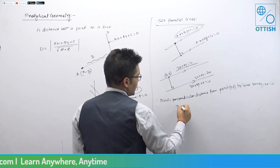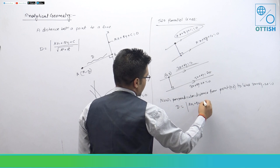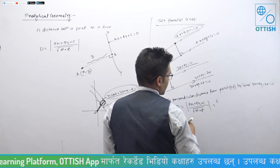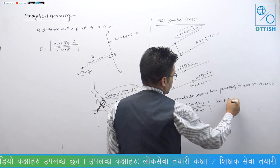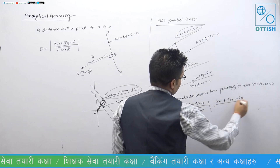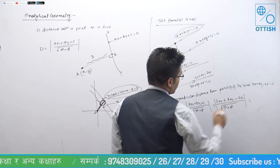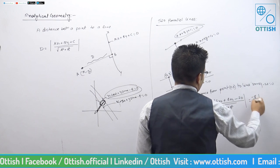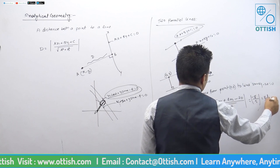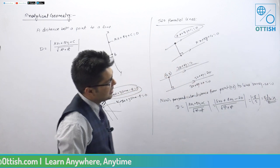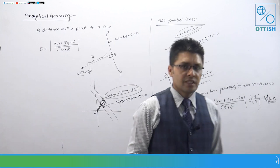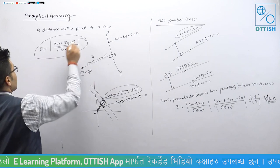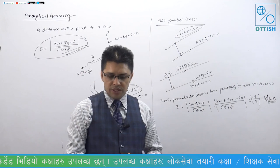D is equal to ax₁ plus by₁ plus c, divided by root over a squared plus b squared. Here A equals 3, B equals 4, C equals minus 20, x₁ equals 0, y₁ equals 3. So D equals 3 times 0 plus 4 times 3 minus 20, over root of 3 squared plus 4 squared, which gives 0 plus 12 minus 20 over 5, that is minus 8 over 5, so the distance is 8 by 5 units. This is the implementation.